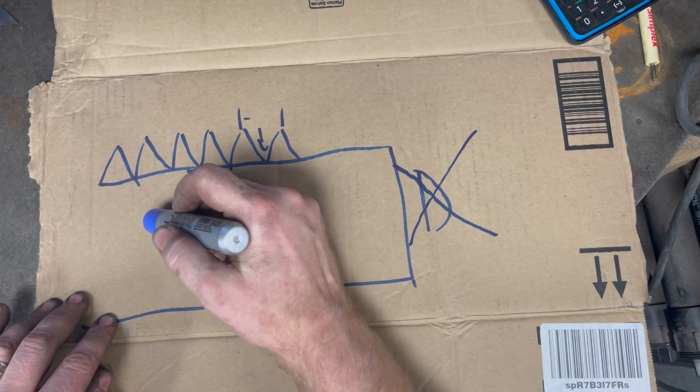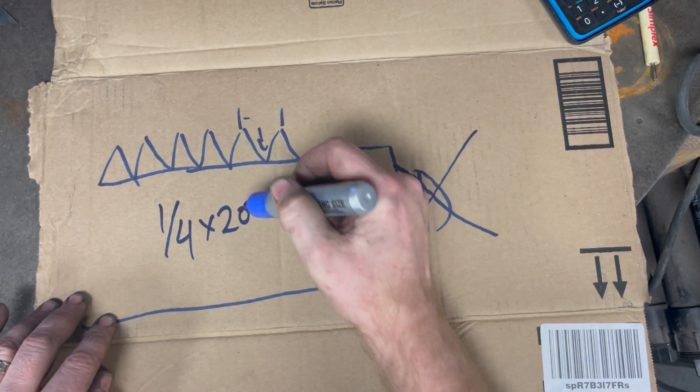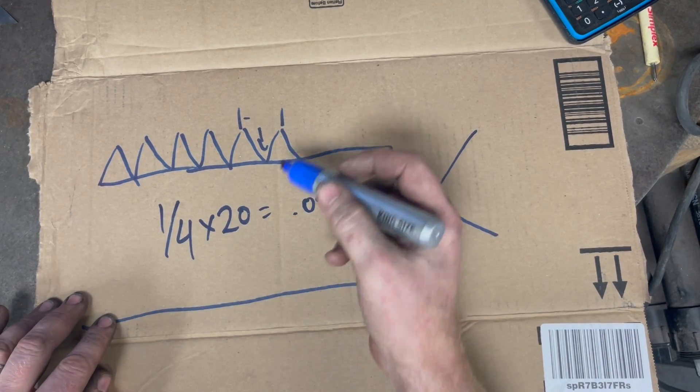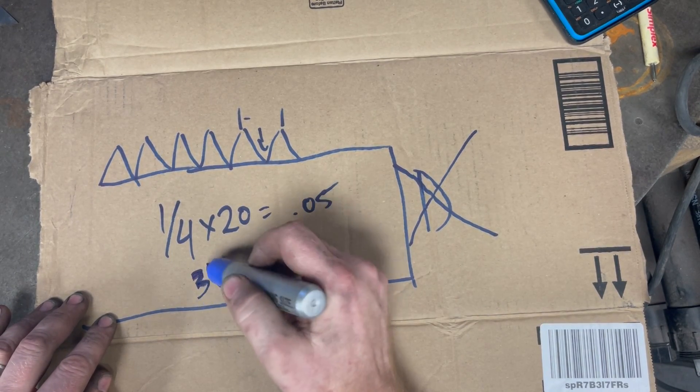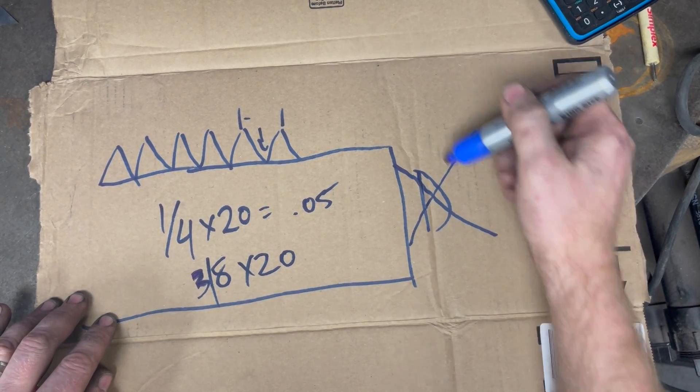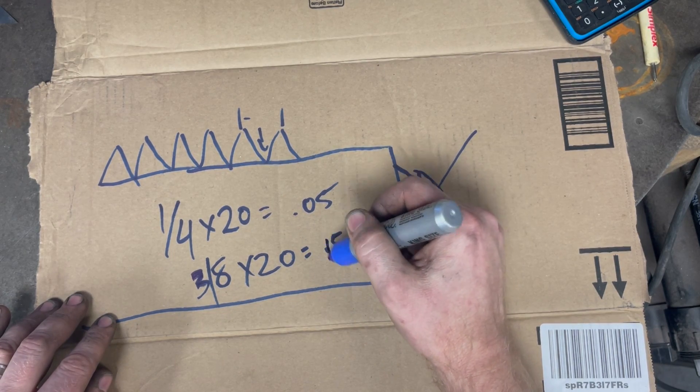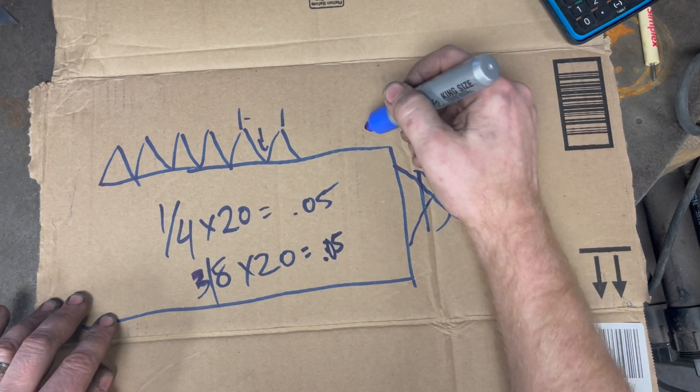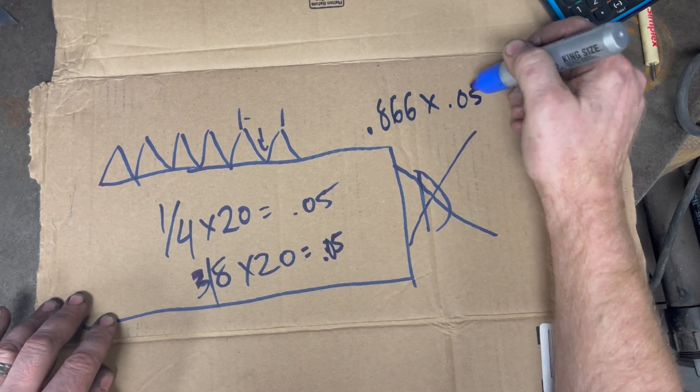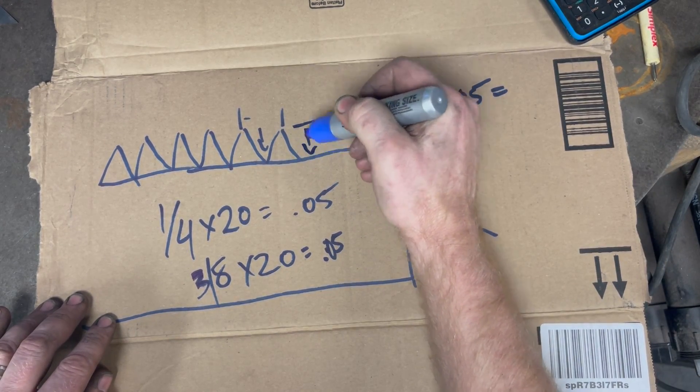If it's one quarter by 20, our pitch is 20, which equals 0.05. If this was a three-eighths by 20, it does not matter what D is. It's still going to be 0.05 for the pitch, and that's also going to be 0.866 multiplied by 0.05, which will give us our answer as to how tall this is.